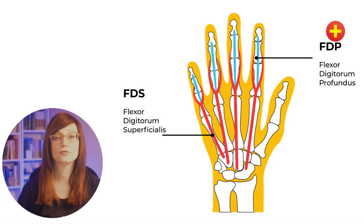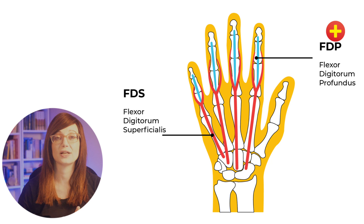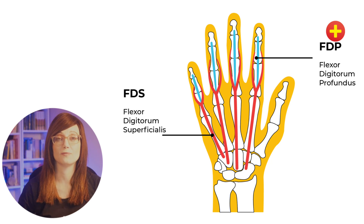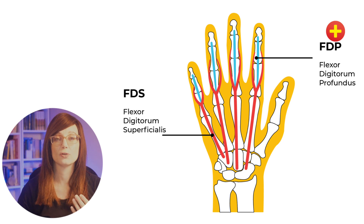So the anatomy: there are two flexor tendons for each finger and one in the thumb. In the fingers, which is what we're focusing on today, you've got the flexor digitorum superficialis and the flexor digitorum profundus. You've also got the flexor pollicis longus as the only thumb flexor. These flexor tendons travel distally from the forearm, go through the carpal tunnel, and are named based on the forearm muscles from which they arise.